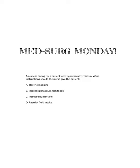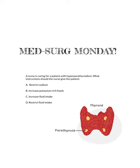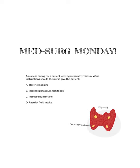First, let's go ahead and review the parathyroid hormone itself. We know that the parathyroid hormone comes from the parathyroid gland, which is located on the thyroid. The parathyroid is responsible for releasing parathyroid hormone, which is released when we have low blood calcium. So the parathyroid hormone will go to the bones, take the calcium out of the bone, and put it into the blood — which increases our blood calcium.